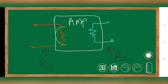The resistance drawn in red color is the internal input impedance of the amplifier, named R1. The resistance drawn in green color is the internal output impedance of the amplifier, represented by R2.